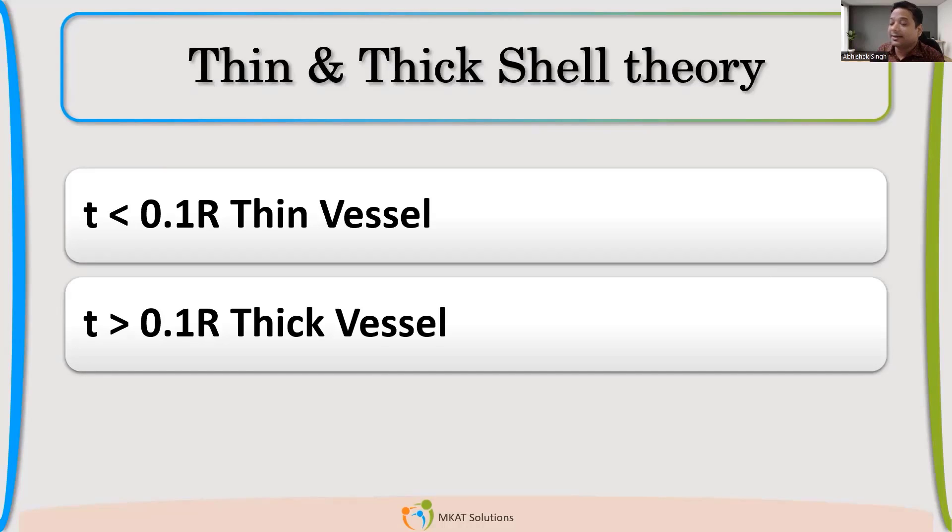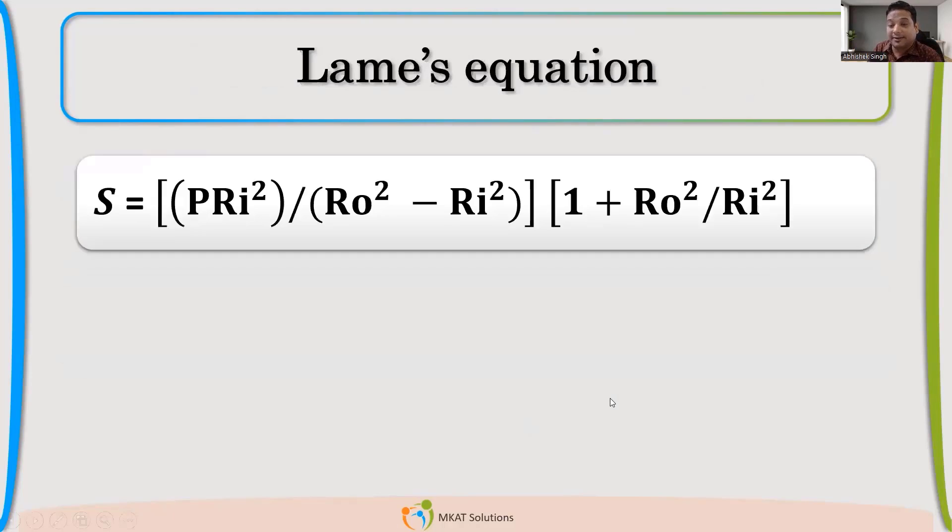Lame's equation predicts the stresses for thick shell. When your T is greater than 0.1R, we can use this formula. I think you are able to understand what are the different terms. P is pressure, S is the stress, Ri inside radius, Ro outside radius. By using this equation, I can find the stresses for thick shell.